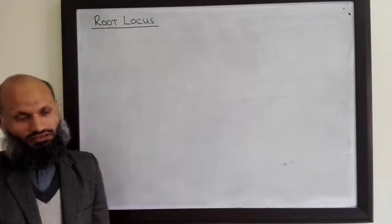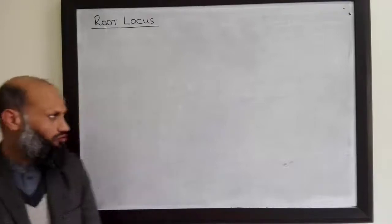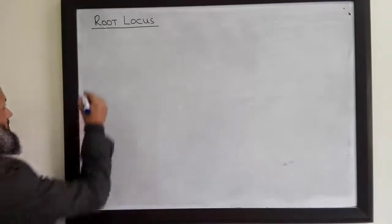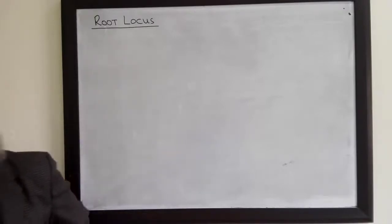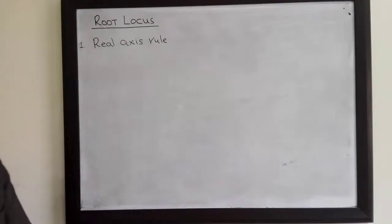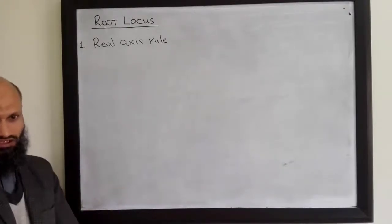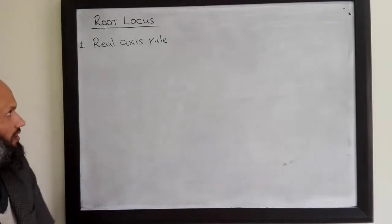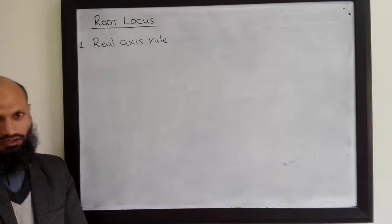In today's lecture we shall talk about a few rules which help us to sketch the root locus for a system. The first rule from the last lecture is the real axis rule. This rule states that the part of the real axis to the right of which there are odd number of poles and zeros, that part of the real axis will be a part of root locus.